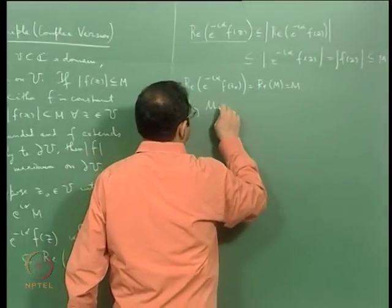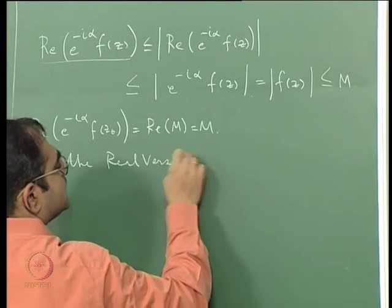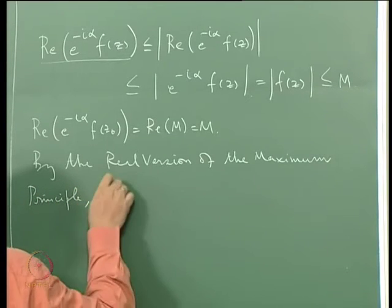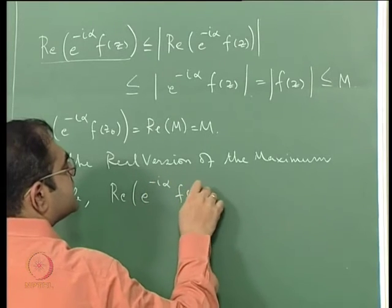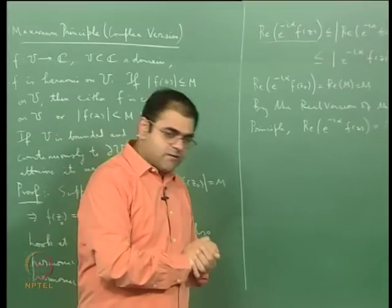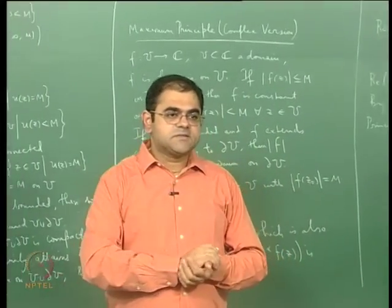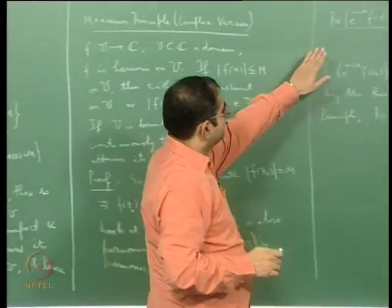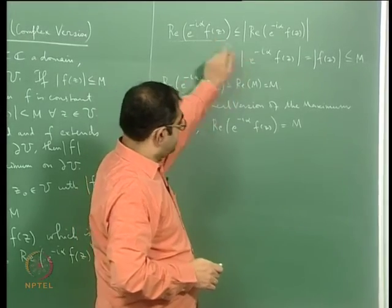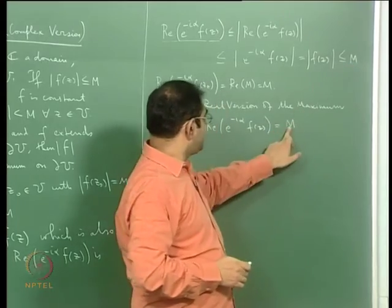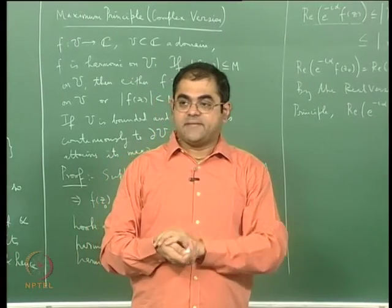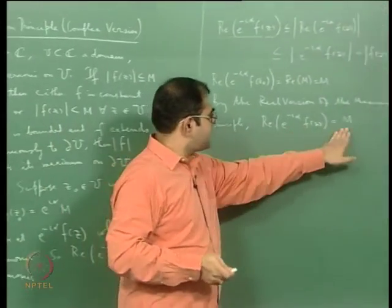By the real version of the maximum principle, whenever a real-valued harmonic function on a domain attains its maximum at an interior point it must be constant. So the real part of e^{−iα}f(z) is a harmonic function on U bounded by M that attains M at z0, therefore it must be constant and equal to M everywhere on U.